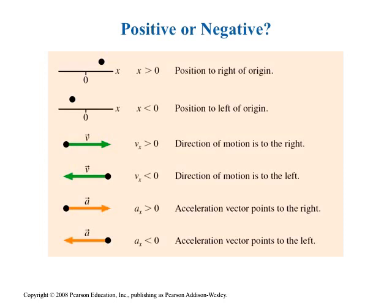The same sign conventions apply to acceleration. If acceleration points right, north, or east, it's positive. If it points south, west, down, or to the left, it's negative. Importantly, acceleration being positive or negative does not indicate whether speed is increasing or decreasing. Acceleration is positive if it points right, north, up, or east. Acceleration can be positive while velocity is negative, meaning the object is slowing. Acceleration can be negative while velocity is also negative, meaning the object is still gaining speed.